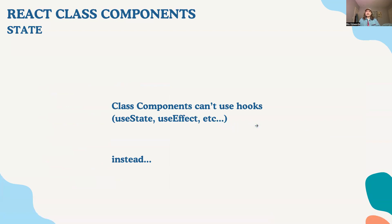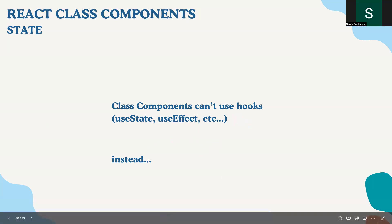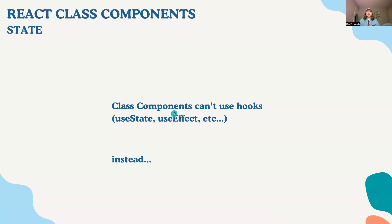Another thing about class components is they can't use hooks. Hooks came around to solve some problems with functional components — function components originally couldn't have state. You had to use class components for managing state, and function components just returned JSX. Now function components have hooks like `useState` and `useEffect`, which give them the same functionality that class components always had. Class components have their own way of doing state and effects — you can't use hooks the same way.